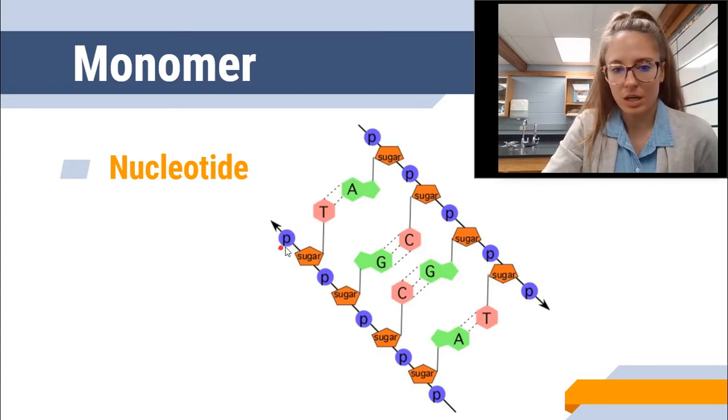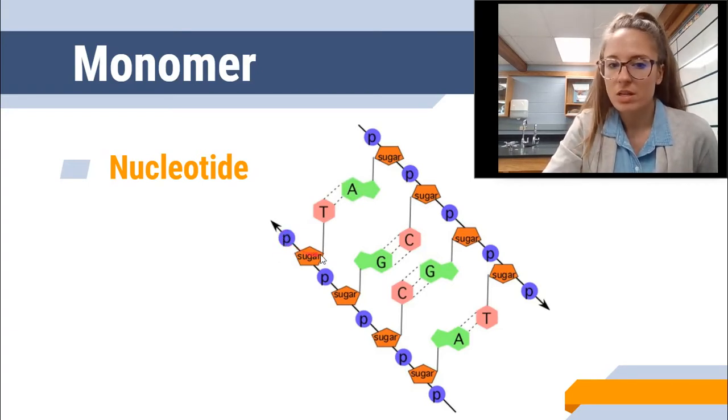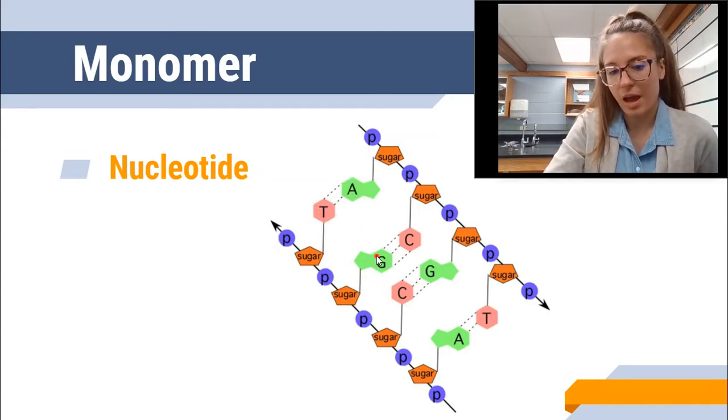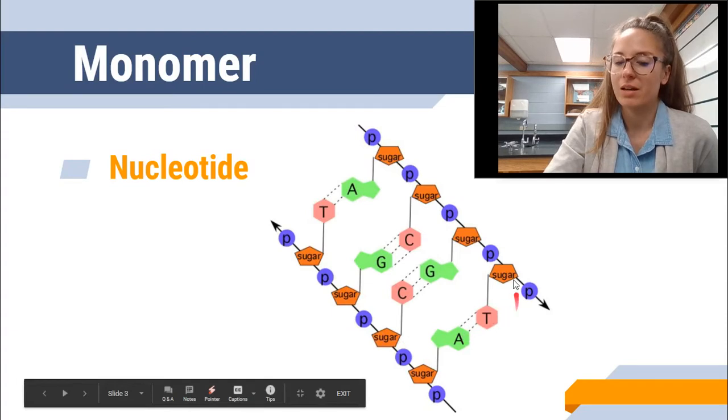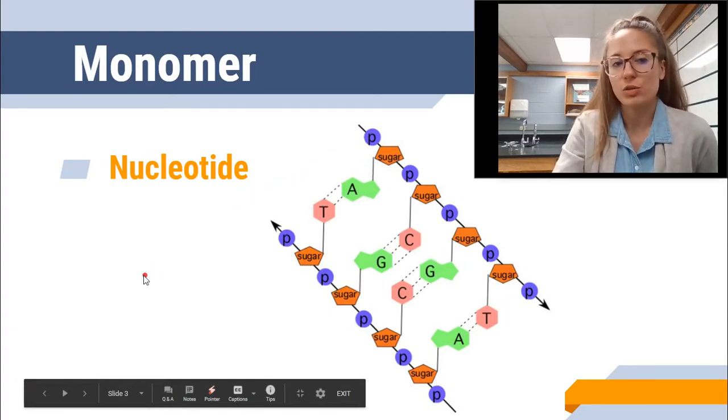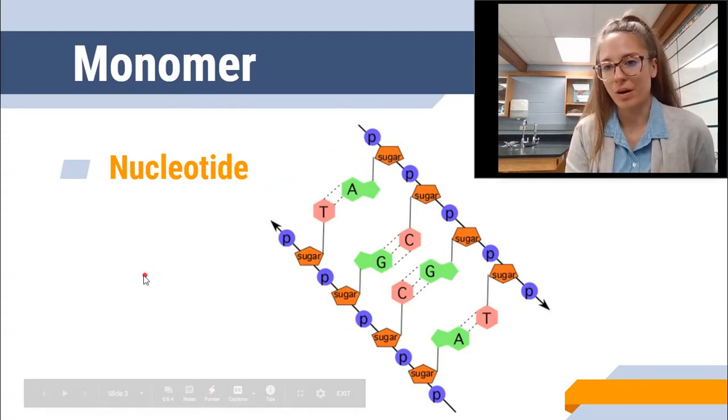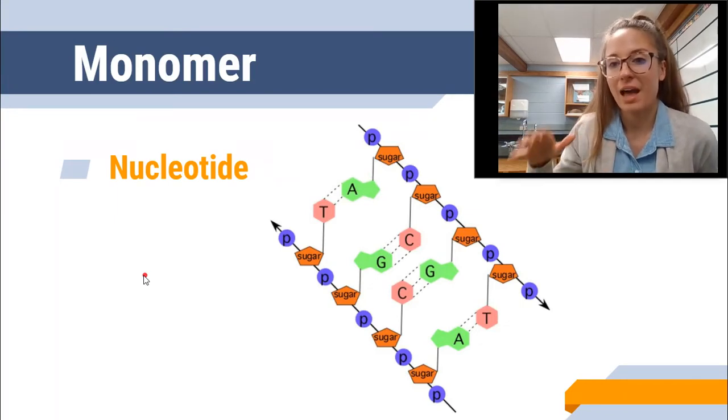Each nucleotide is made up of one of these purple circles, one of these orange pentagons, and then either a pink base or a green one. So you can see these repeating over and over again on both sides. So nucleotide is the monomer of a nucleic acid.